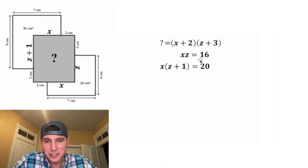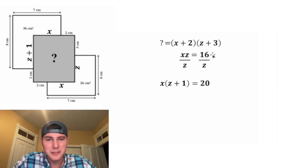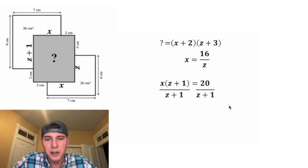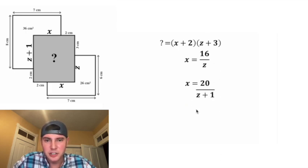Now we have a system of equations. We have two variables and two equations. Let's get x by itself for both of these. For this top one, we'll divide both sides by z. These z's will cancel each other out, leaving us with just x equals 16 over z. And for this one, let's divide both sides by z plus 1, and then these will cancel, leaving us with just x equals 20 over z plus 1.